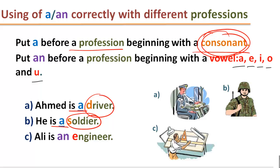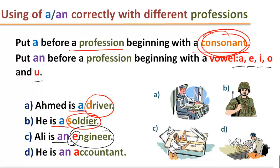Ali is an engineer. The word engineer begins with a vowel E. And definitely we have to use An before a word beginning with a vowel. He is an accountant. The word accountant begins with A and A is a vowel. So we have to put An before accountant.